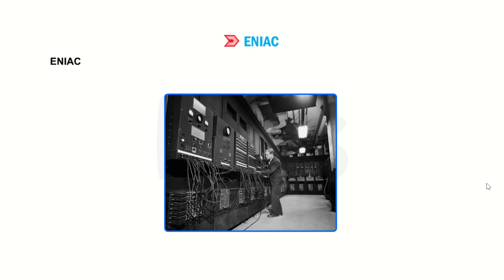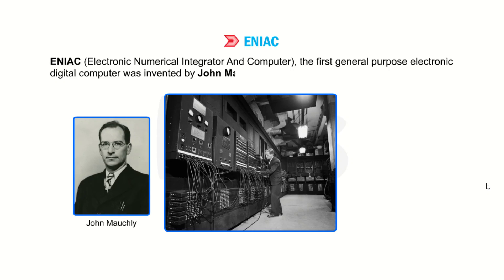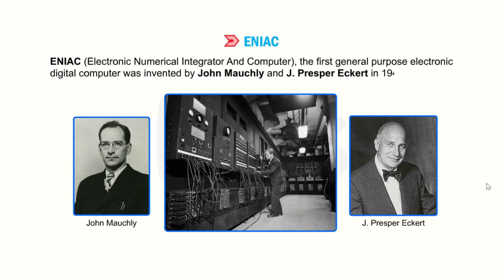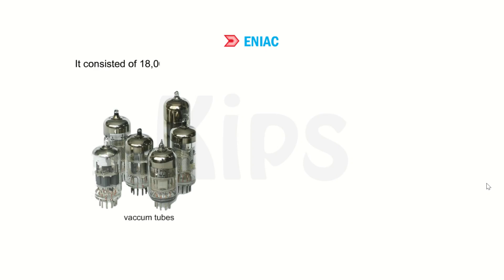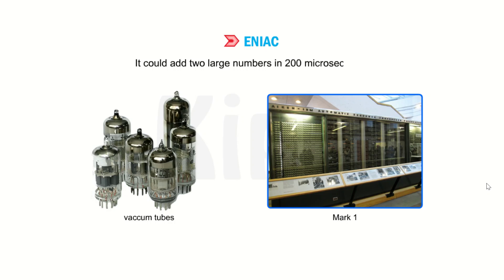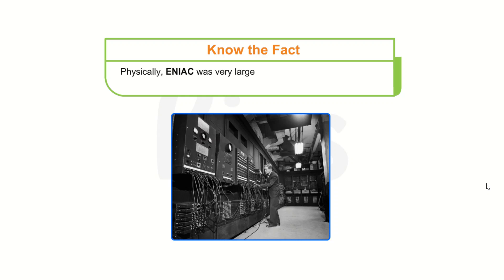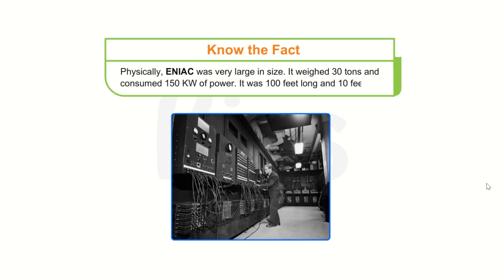ENIAC — Electronic Numerical Integrator and Computer: The first general-purpose electronic digital computer was invented by John Mauchly and J. Presper Eckert in 1946. It consisted of 18,000 vacuum tubes and was a thousand times faster than the Mark I. It could add two large numbers in 200 microseconds. Students, you will be surprised to know that physically, ENIAC was very large in size. It weighed 30 tons and consumed 150 kilowatts of power. It was 100 feet long and 10 feet tall.